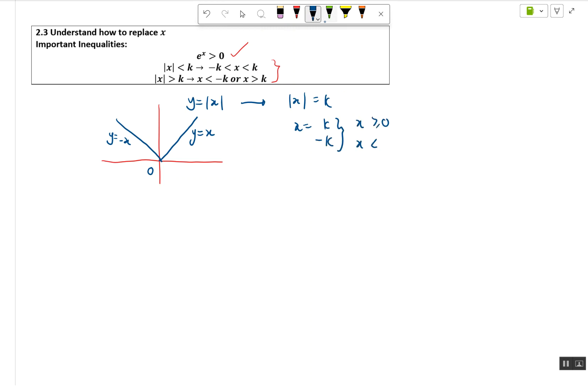It depends on whether x is greater than or equals to zero, or if x is less than zero. Now if we are going to draw a line y equals k, like over here for example, so let this line be y equals k.